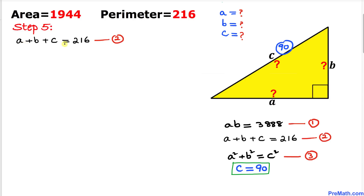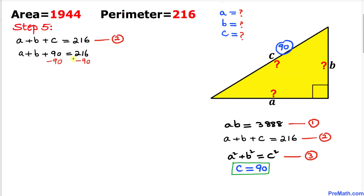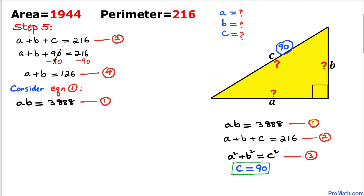Here's our next step. Let's recall equation 2: a plus b plus c equals 216. We know that c equals 90, so I can write a plus b plus 90 equals 216. Subtracting 90 from both sides, our a plus b value turns out to be 126. Let's call this equation number four.